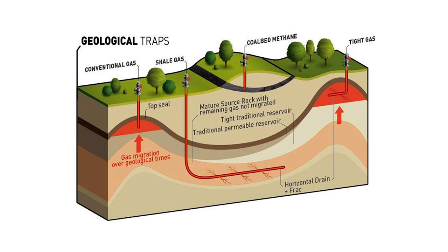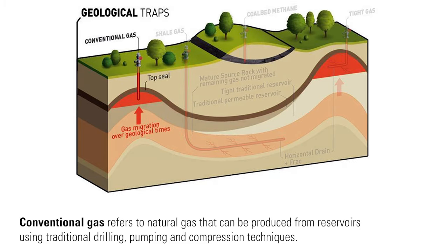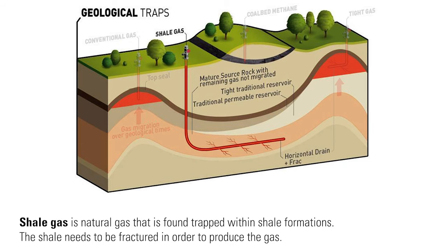This illustration shows just a sample of the most popular wells being drilled today. Not all well types exist in every production play. Conventional gas refers to natural gas that has been produced from reservoirs using traditional drilling, pumping, and compression techniques. Shale gas is natural gas that is found trapped within shale formations.